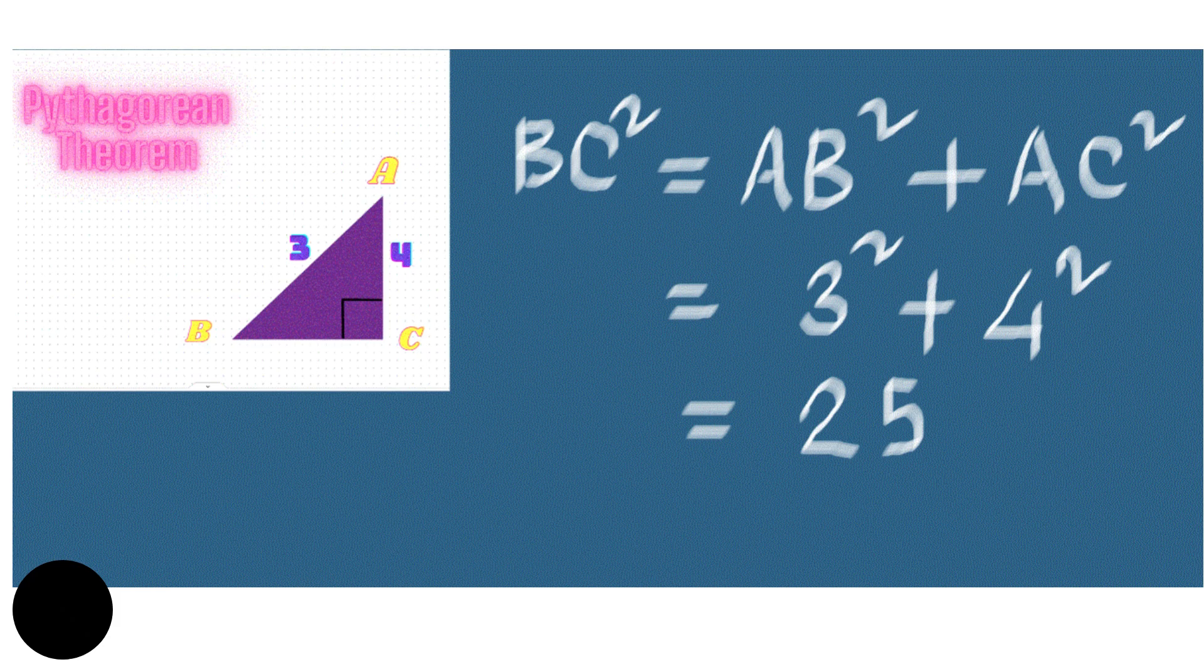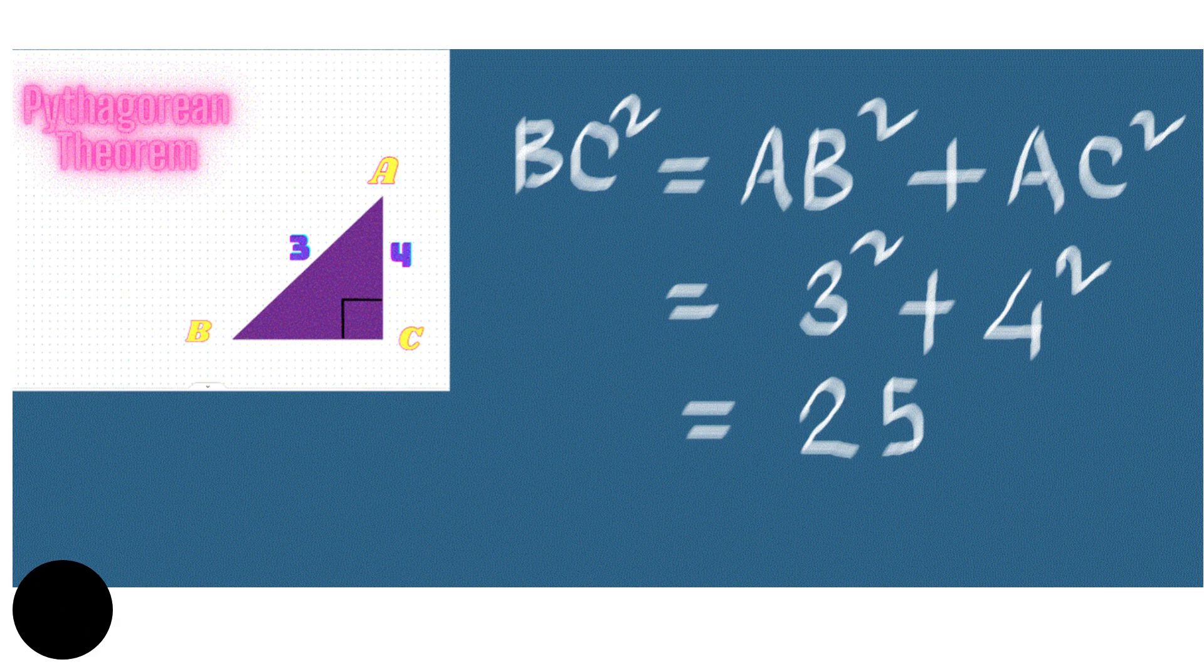So the theorem states that the square on the hypotenuse of a right angle triangle is equal to the sum of the squares on the other two sides.